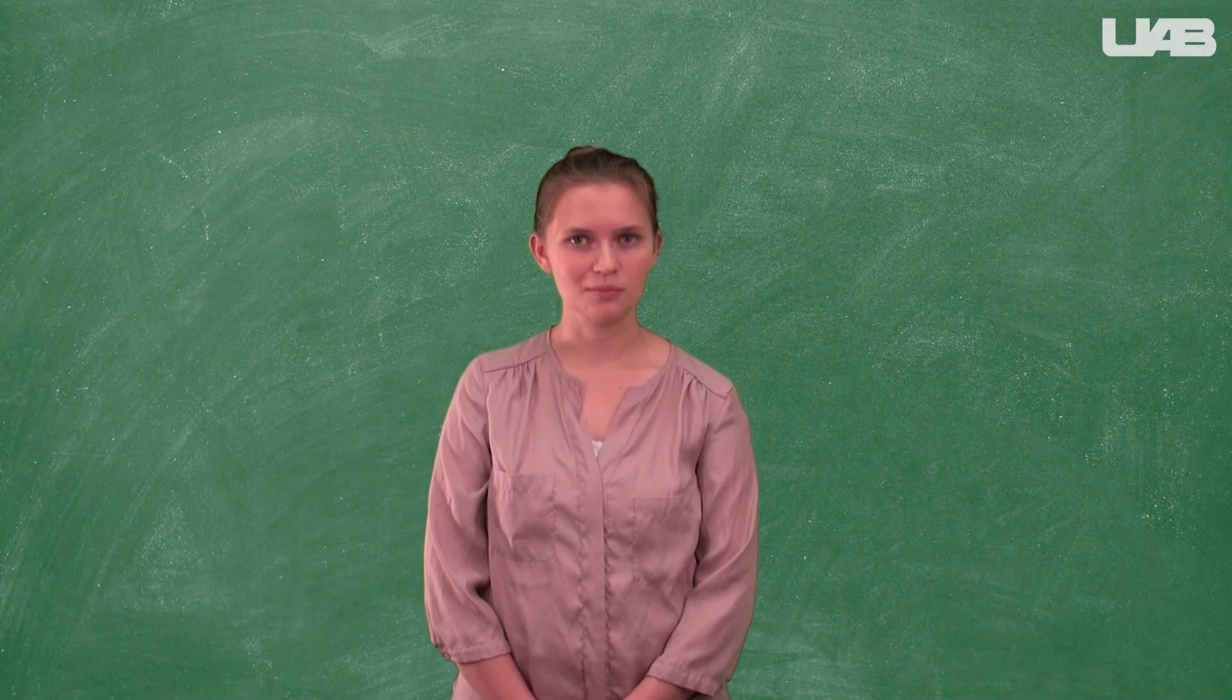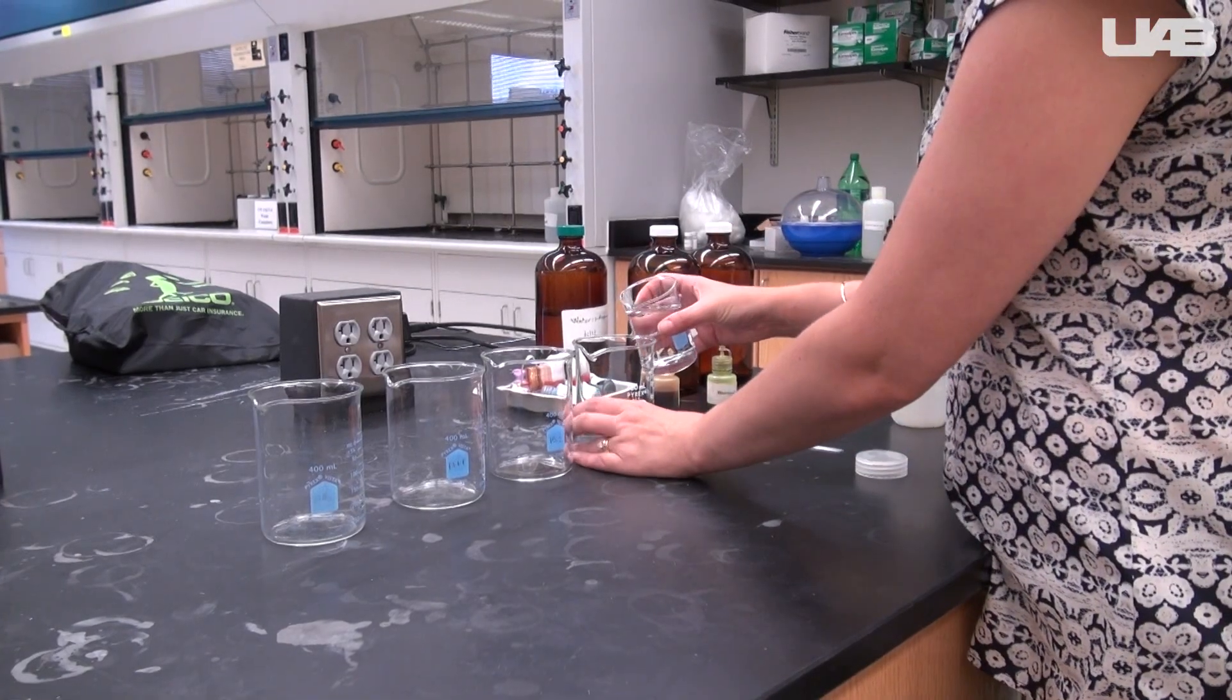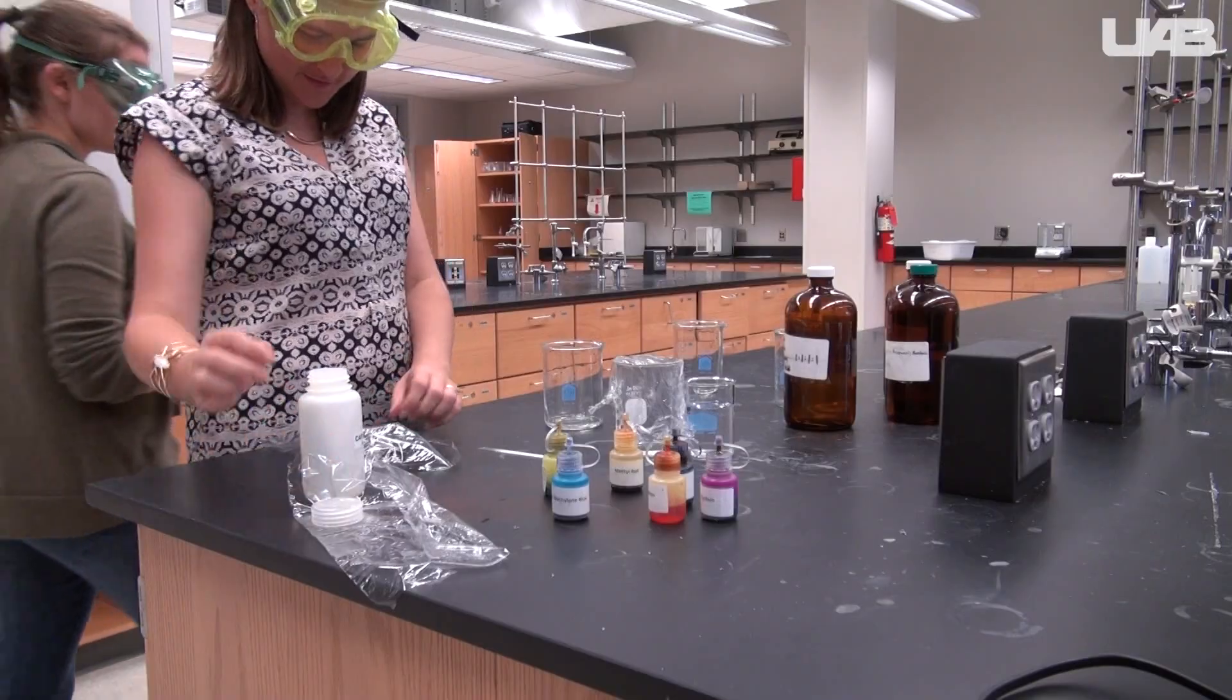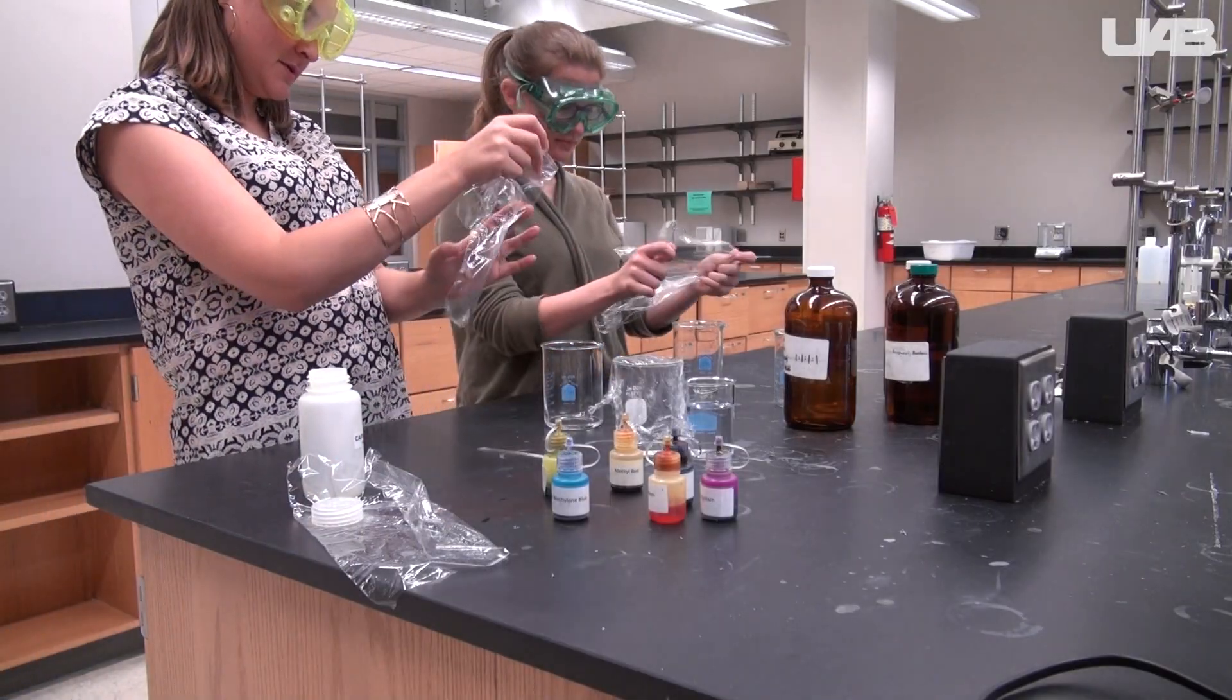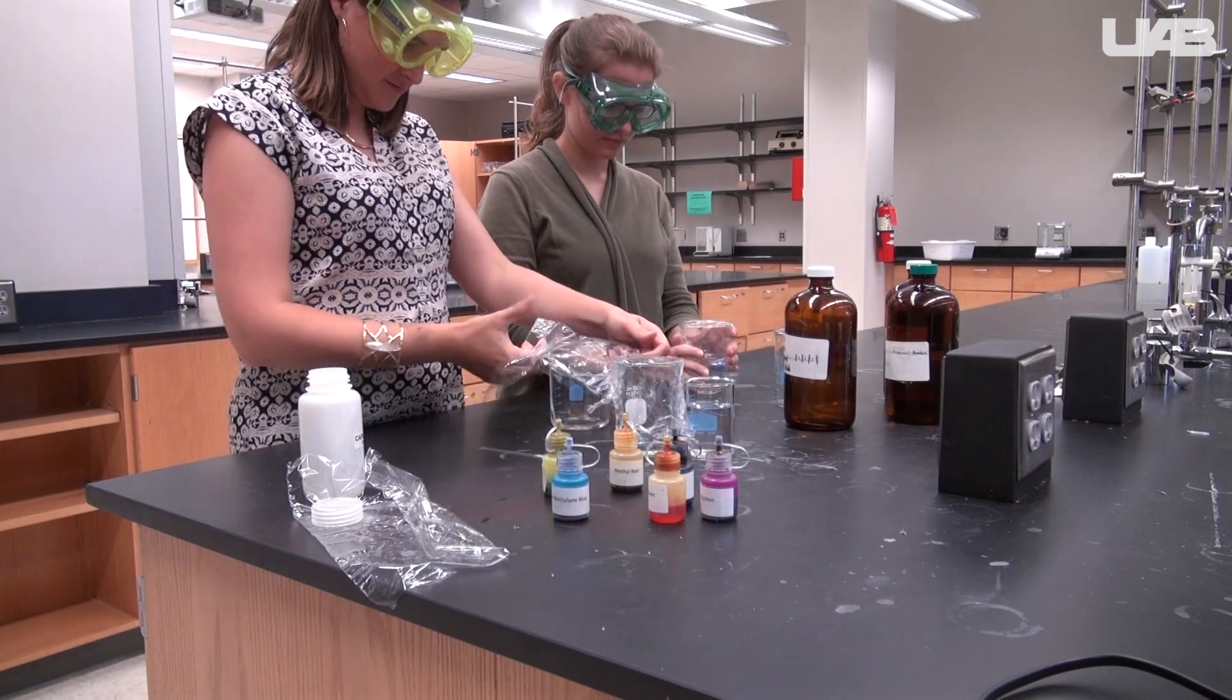Begin by setting up your solvent chambers. Each group will prepare four TLC plates, so you will need four solvent chambers. Add one solvent to each of the four beakers. You don't need very much. Cover each beaker with cellophane or plastic wrap.